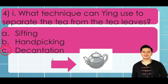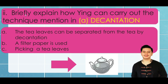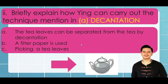Next: briefly explain how Yin can carry out the decantation technique. The choices are: a) the tea leaves can be separated from the tea by decantation, b) a filter paper is used, or c) picking the tea leaves. The correct answer is letter a, because this answer already describes decantation correctly.